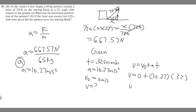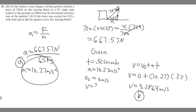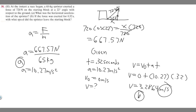Multiplying 10.27 by 0.32, we get V equals approximately 3.2864 meters per second. You can round this however you want. So to summarize: the answer to Part A is 10.27 meters per second squared, and the answer to Part B is 3.2864 meters per second. That's how you solve this problem.